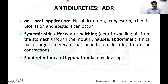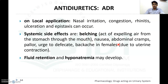Adverse drug reactions of vasopressin: on local application, it can produce nasal irritation, congestion, rhinitis, ulceration, and epistaxis. Systemic side effects include belching (expelling air from the stomach through the mouth), nausea, abdominal cramps, pallor, urge to defecate, and backache in females due to uterine contraction. It may also cause fluid retention and hyponatremia.